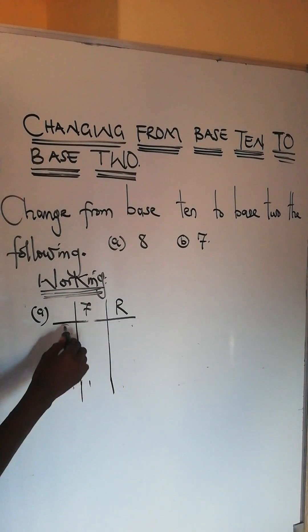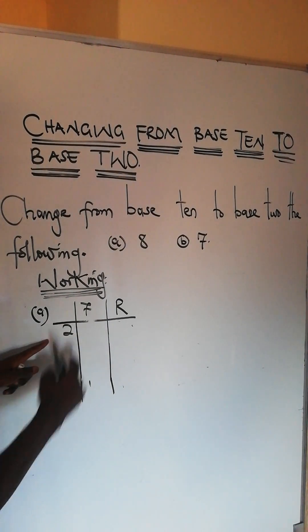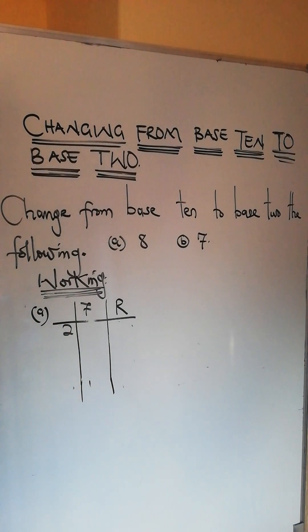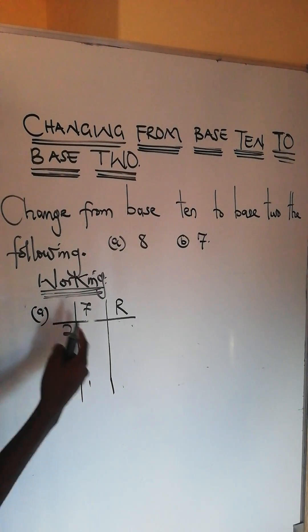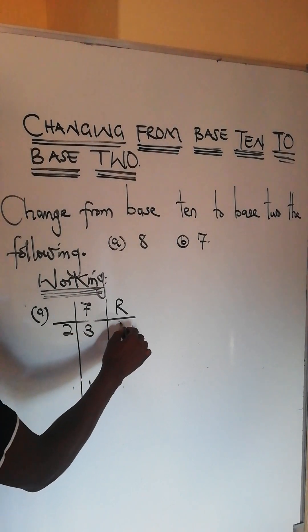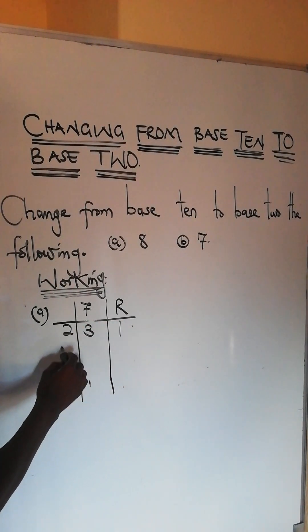You put a 7 here and you have a 2 here. So you divide 7 divided by 2. 2 can divide 7 three times and leave a remainder of 1.